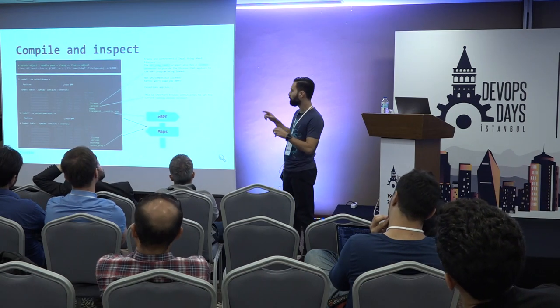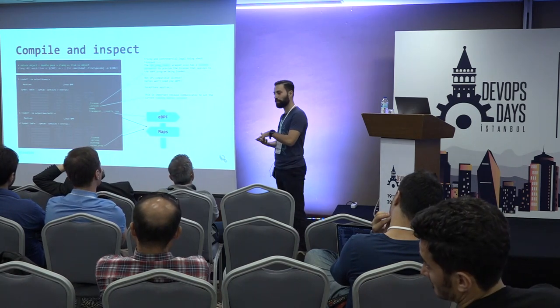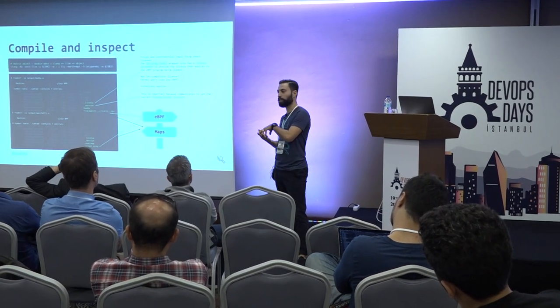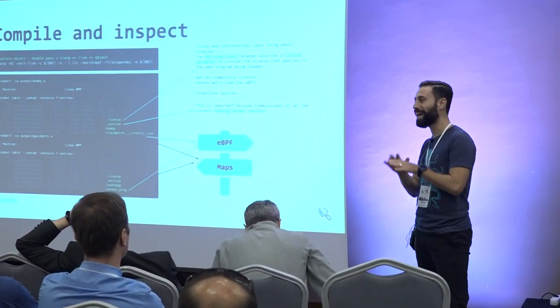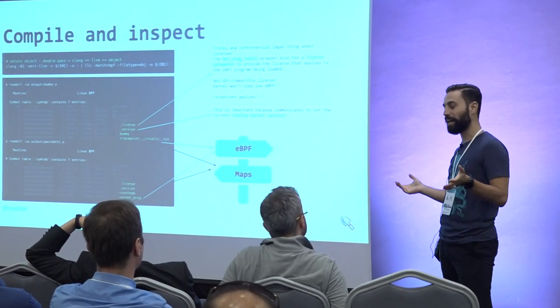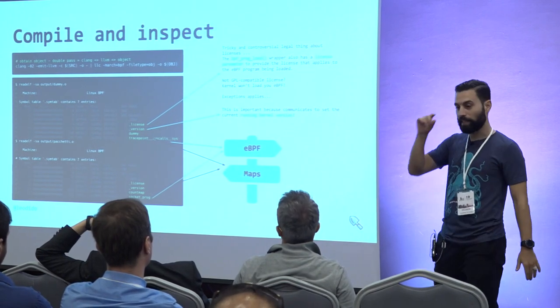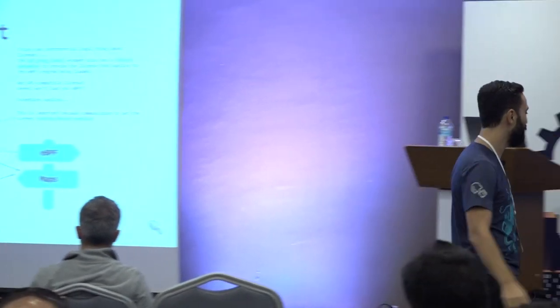I want to spend two words on license and version — these are tricky, controversial things. The license section in the BPF: basically in the BPF program load, there's a wrapper that checks that your BPF has a GPL-compatible license, otherwise it will not work. You can spend hours debugging it — there's not even a log line saying 'I need a BPF code which is GPL licensed.' If you don't put that GPL license, it will not work. The version macro is basically a section in the BPF program to say 'please use the current running kernel.' Just that.